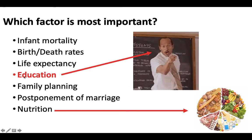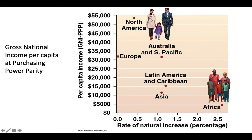So when we think about factors like education and family planning, which is most important in terms of causing a population to grow? It's wealth. Wealth is going to make all of these things better — access to better education, better nutrition, family planning, and better medicine and healthcare, so death rates will be down and birth rates will be up. You can see this in a graph with growth rate on the x-axis and gross national income per capita at purchasing power parity on the y-axis — basically how much money the average person has to spend each year. Wealthier countries tend to have slower growth rates than countries with less money.